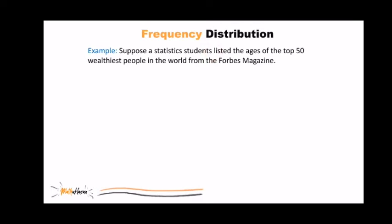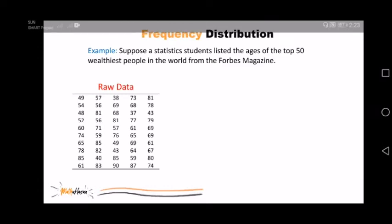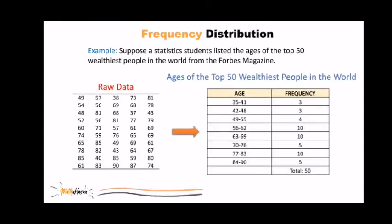When the data are in original form, they are called raw data and are listed on the left. Since little information can be obtained from looking at the raw data, the student now organizes this data into what is called a frequency distribution. The frequency distribution consists of classes and their corresponding frequencies. Each raw data value is placed into a quantitative category called classes. The frequency of classes then is the number of data values contained in a specific class.